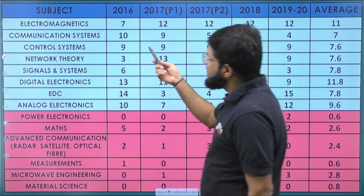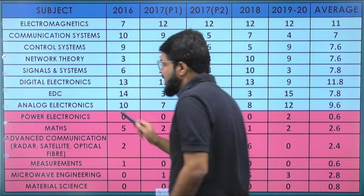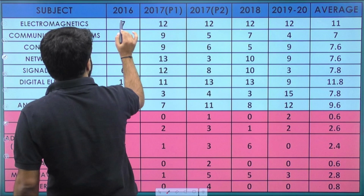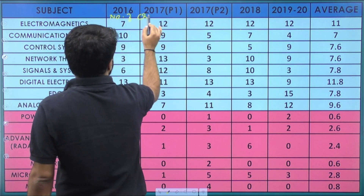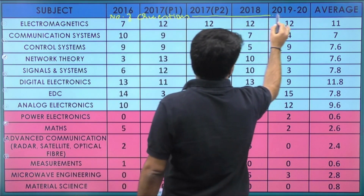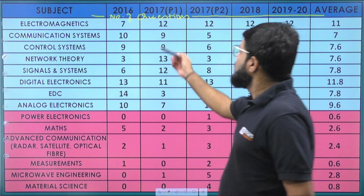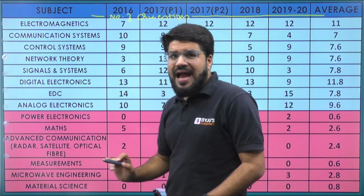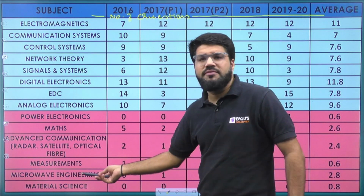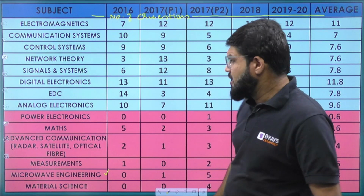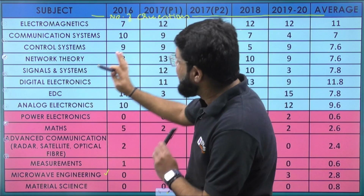Looking at the weightage slide, all figures mentioned are number of questions. I've bifurcated the subjects into two colors: one color for GATE-level core subjects you prepare for GATE, and another for branch-related allied subjects like power electronics, advanced communication, satellite communication, optical fiber, microwave engineering, and material science.